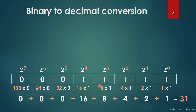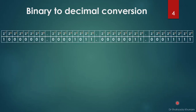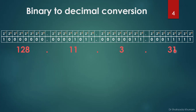This is how we convert from binary to decimal. In the same way: this binary equals 128, this binary equals 11, this binary equals 3, and this binary equals 31. So the full dotted decimal address is formed from these four converted octets.